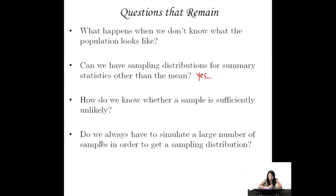Do we always have to simulate a large number of samples in order to get a sampling distribution? Because that seems like that's going to be really hard to do. So these are just some questions that remain, but we just went through the intro, so these will be answered later on.